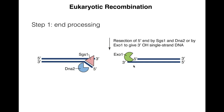The three-prime end is then bound by a RecA homologue called RAD51. Just as RecA facilitates invasion of the three-prime strand into the homologous strand where it's extended using that strand as a template, RAD51 does the same. Notably, RAD51 is regulated by many other proteins, including the BRCA2 gene — the breast cancer susceptibility gene number two — whose product mediates RAD51 activity. If you can no longer regulate RAD51 appropriately to allow correct repair of double-strand breaks, that can lead to cancer.